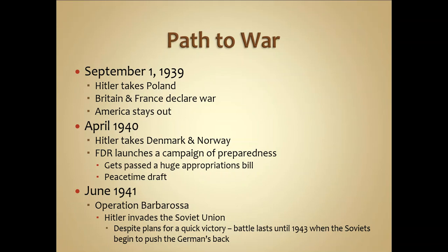Before Operation Barbarossa, the invasion of France took place. Since Hitler had gone through Denmark and Norway, he approached from a northern perspective — coming down through a forest considered impossible to traverse — creating an element of surprise. The German offensive decimated the French and British forces, who were driven into retreat toward the sea. About 400,000 French and British troops were trapped at the beaches of Dunkirk on the French side of the English Channel.